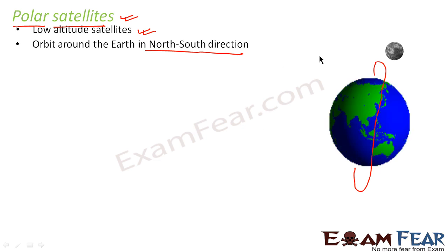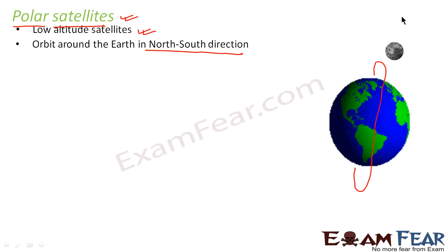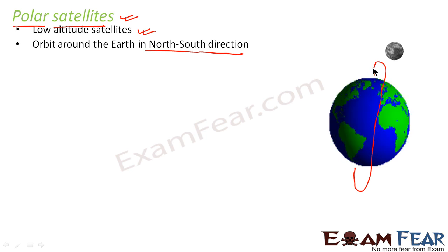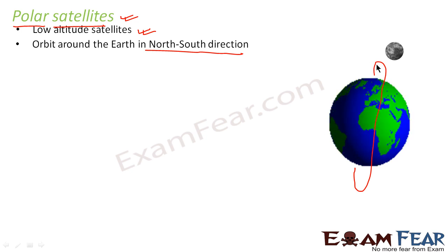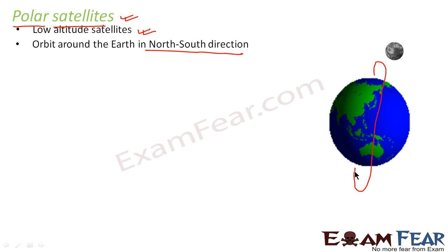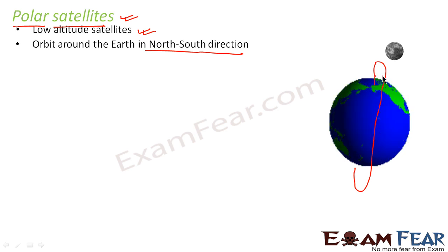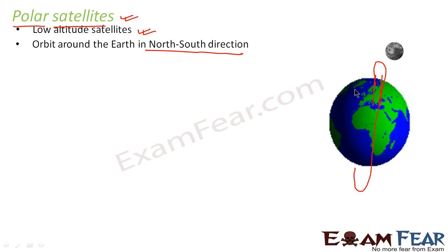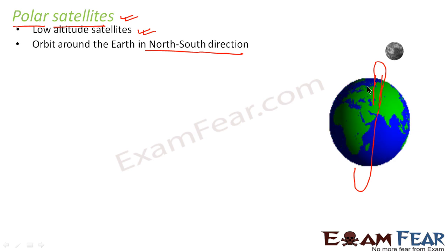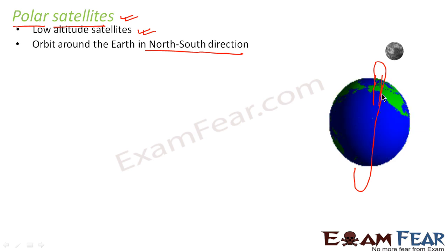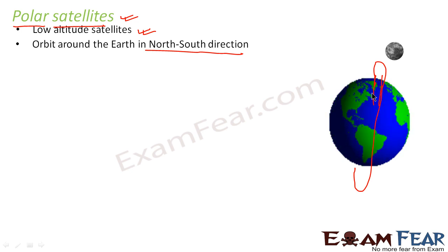In these kinds of satellites, a camera fixed above such a satellite can view only small strips of earth in one orbit, because when this satellite is moving in this way, the camera fixed on it can only view this strip of the earth. But since the earth also keeps moving, at each time different strips of the earth will keep getting viewed. So at one time only one strip of earth is viewed, and adjacent strips are viewed in subsequent orbits.